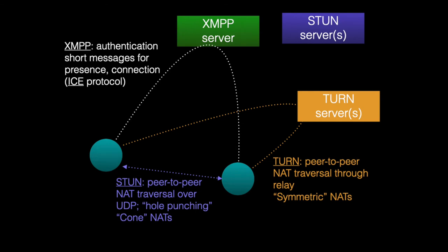Bootstrapping uses an XMPP server that authenticates nodes into the network and sends short messages to signal that a node has joined or left, and to request or initiate connections using the ICE protocol.